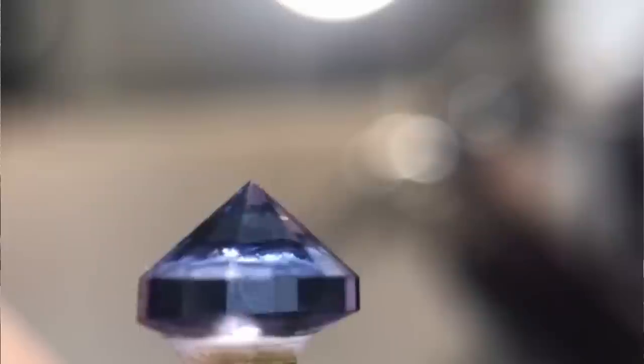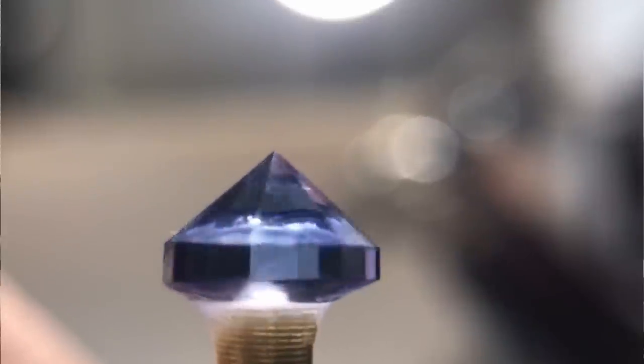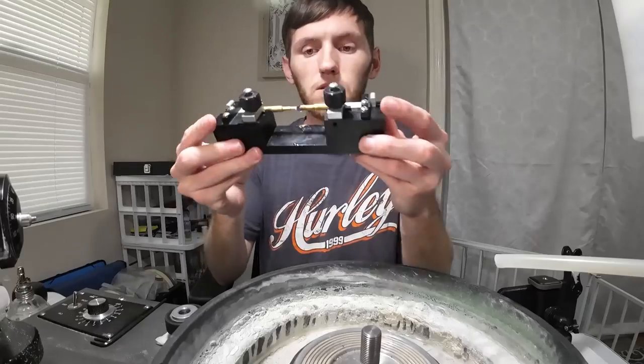Alright here's the stone with the pavilion side cut in. Everything's now polished and is ready to go in the transfer dop. Something interesting about tanzanite is that it has some directional coloring depending which way you rotate it. It'll look almost a little more purple or a little more blue.